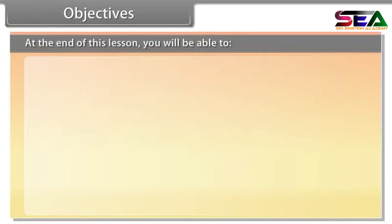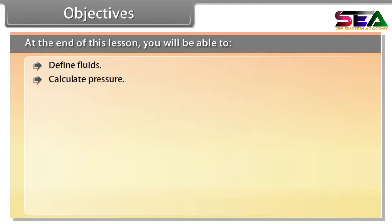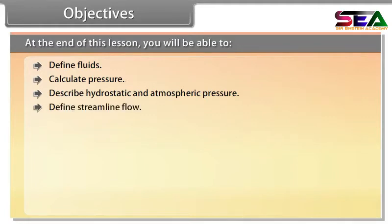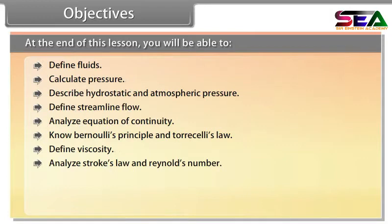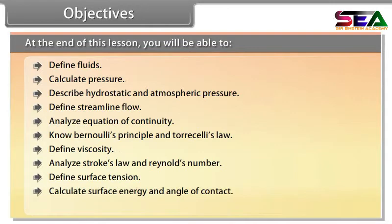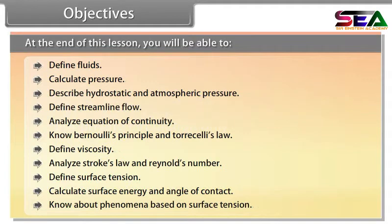Objectives: At the end of this lesson, you will be able to — define fluids, calculate pressure, describe hydrostatic and atmospheric pressure, define streamline flow, analyze the equation of continuity, know Bernoulli's principle and Torricelli's law, define viscosity, analyze Stokes' law and Reynolds' number, define surface tension, calculate surface energy, calculate surface energy and angle of contact, and know about phenomena based on surface tension.